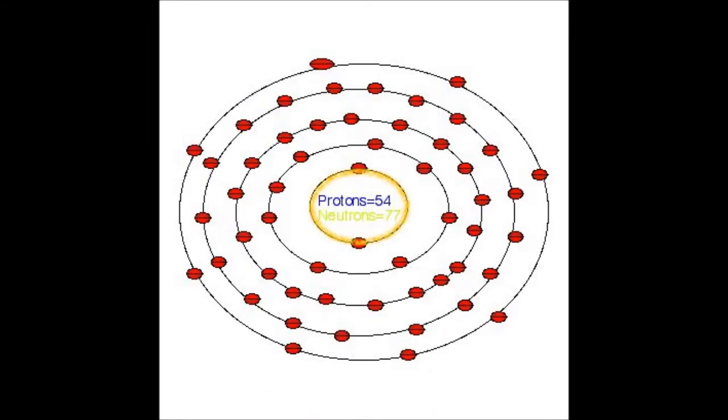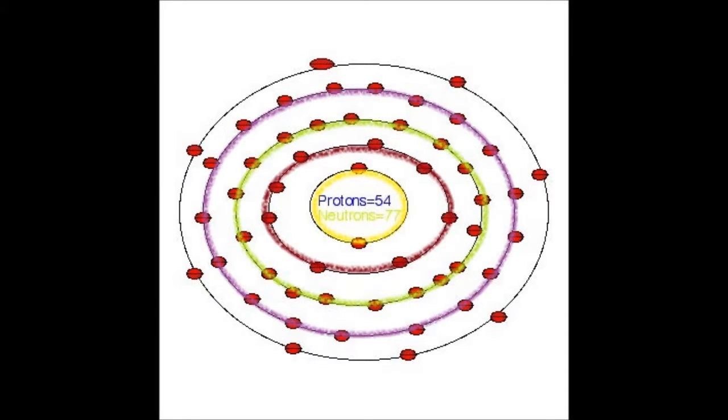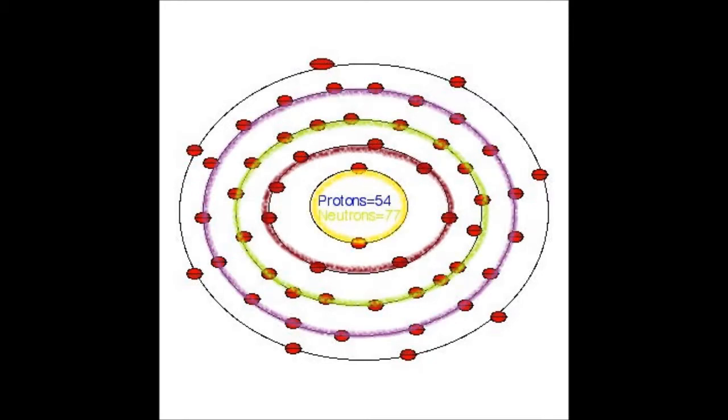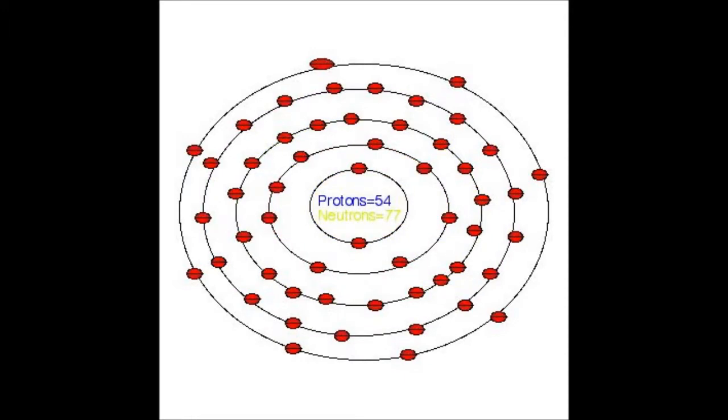There are five energy levels in the basic atomic structure of xenon, containing 54 protons and 77 neutrons located in the nucleus, and 54 electrons distributed throughout its orbitals. Both the third and fourth energy levels, otherwise known as the M-shell and N-shell, are completely filled with 18 electrons.